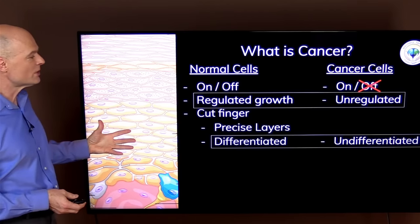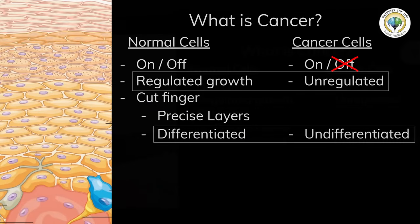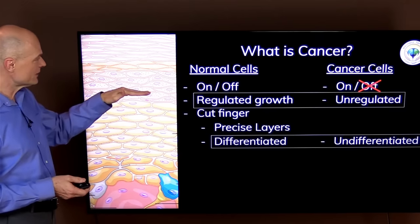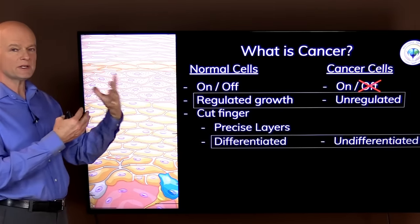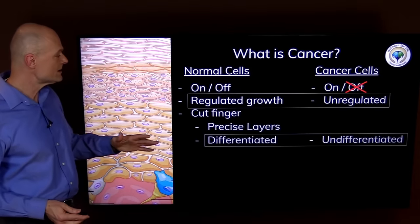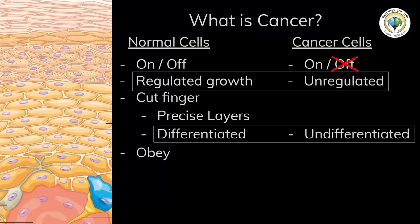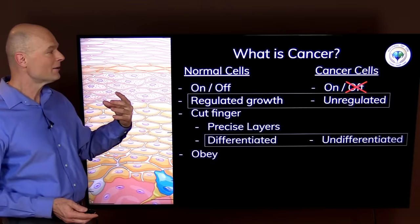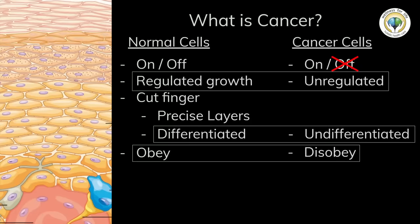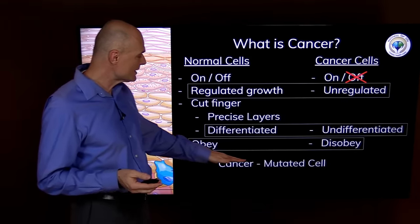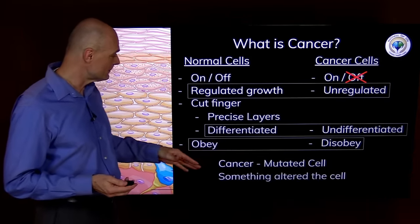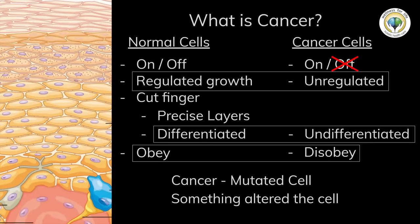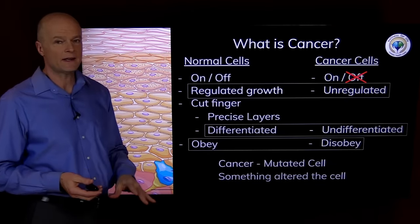But a cancer cell doesn't do that. It is undifferentiated. If we have a bunch of different cancer cells next to each other, they don't really look any different. They're just making more copies of the same thing. Another way of saying that is that normal cells will obey the intelligence and the order in the body, whereas cancer cells disobey. They have stopped listening. And the way a cancer cell gets that way is because there are some mutations.